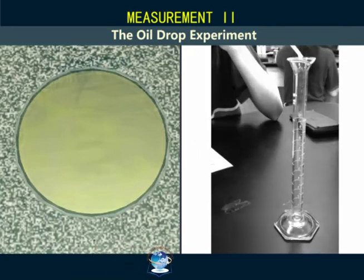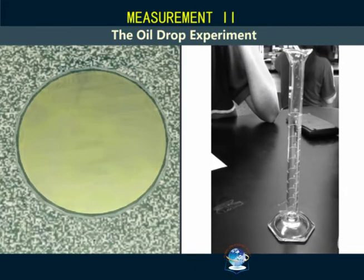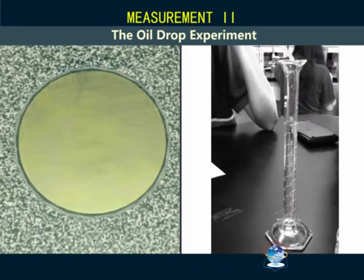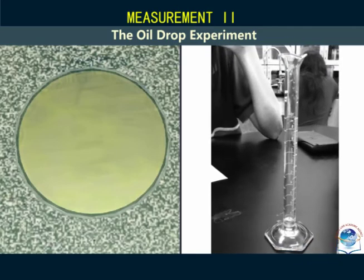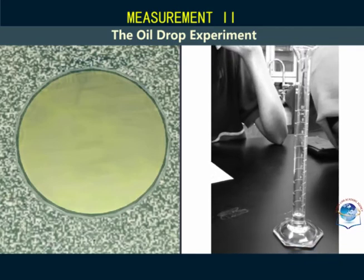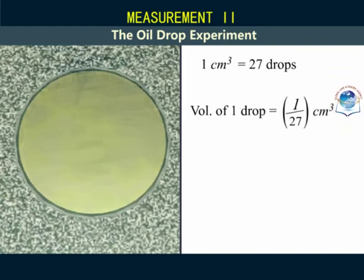By counting the number of drops that make up one cubic centimeter, we can determine the volume of a single drop. For example here, I counted 27 drops that make one cubic centimeter, and that means one drop is equal to 1 over 27 cubic centimeters.